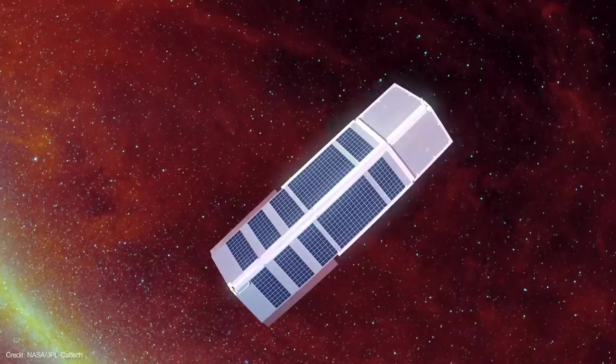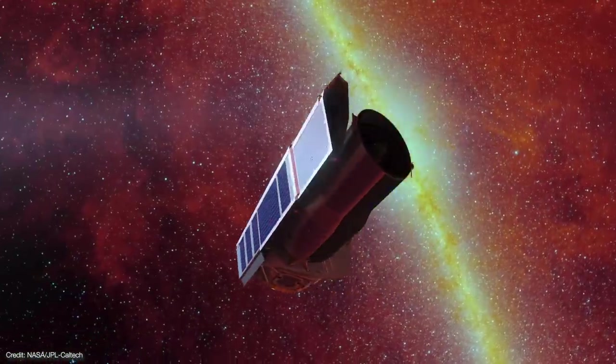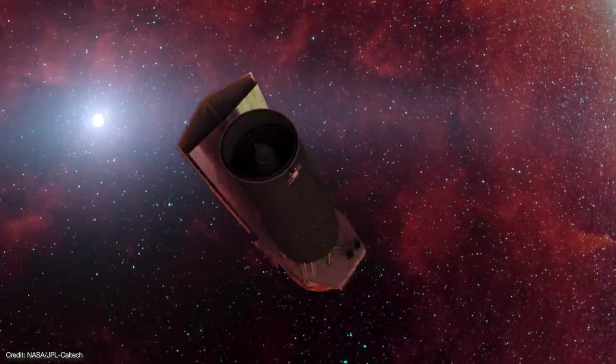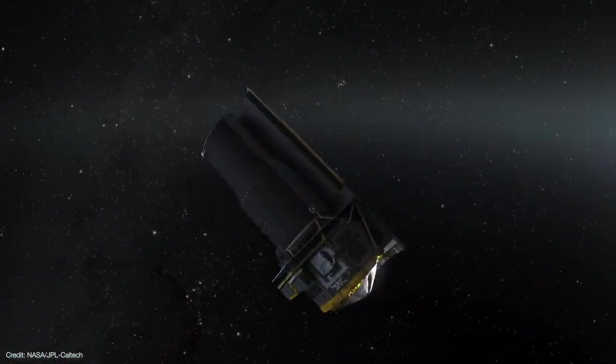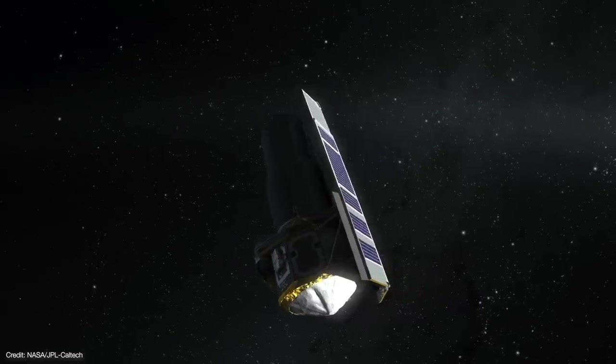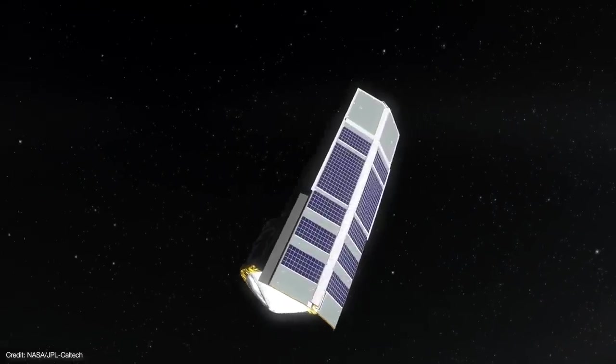Even though its coolant ran out by May 2009, Spitzer still had two working detectors in its IRAC camera. So Spitzer began its warm mission at a balmy minus 404 degrees Fahrenheit. Over its 16-year mission, Spitzer revealed more about the cold and dusty universe than all of the other infrared missions that came before it.